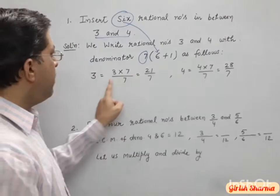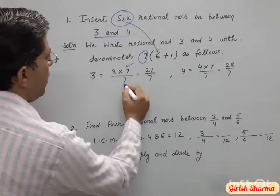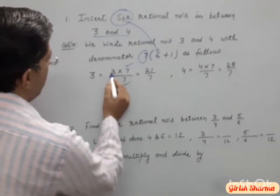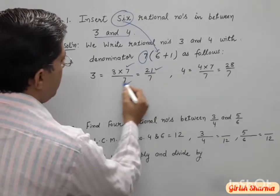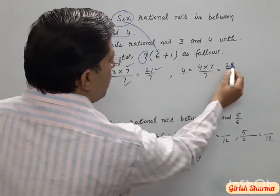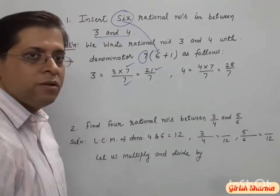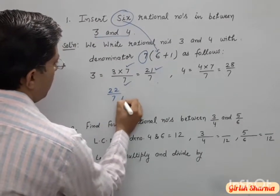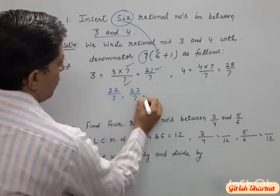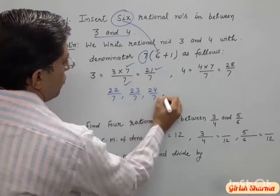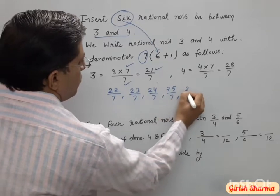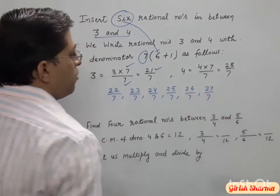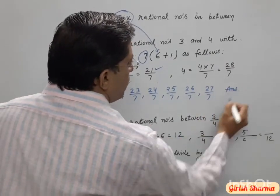To get 7 as the denominator, you multiply and divide by 7. So 3 times 7 is 21 over 7, and 4 times 7 is 28 over 7. Then you can easily get the numbers: 22/7, 23/7, 24/7, 25/7, 26/7, and 27/7.